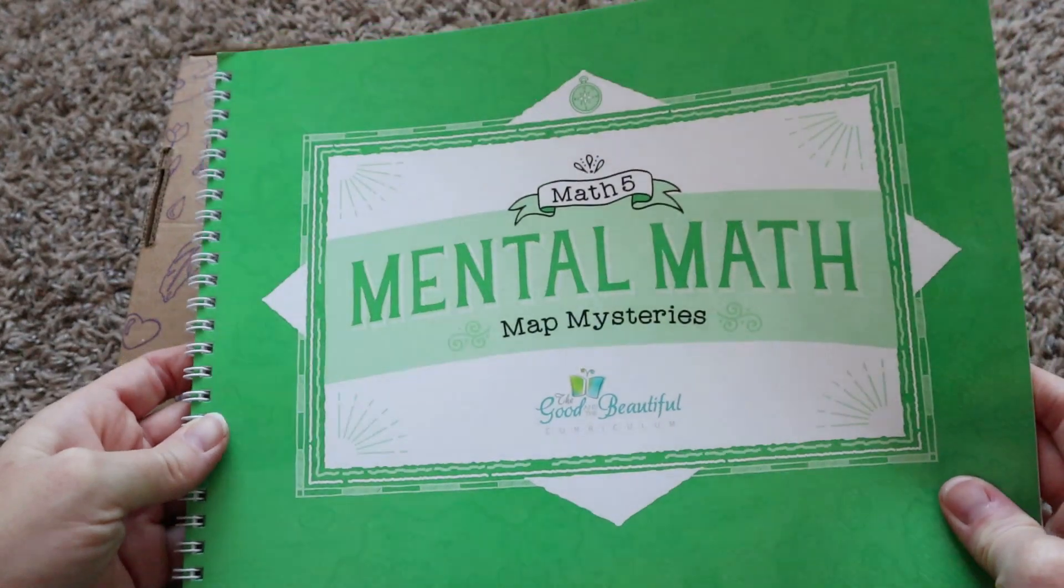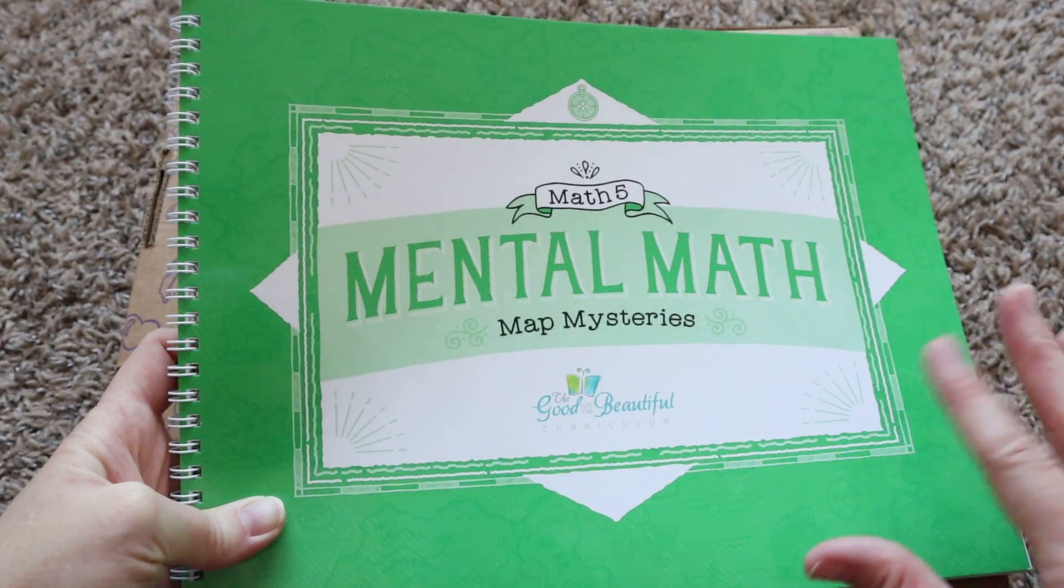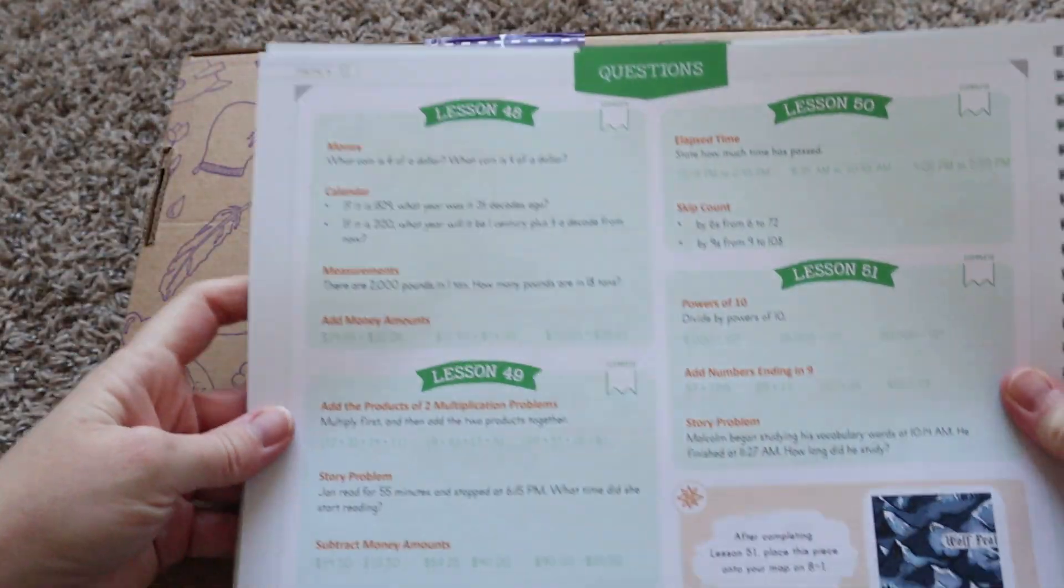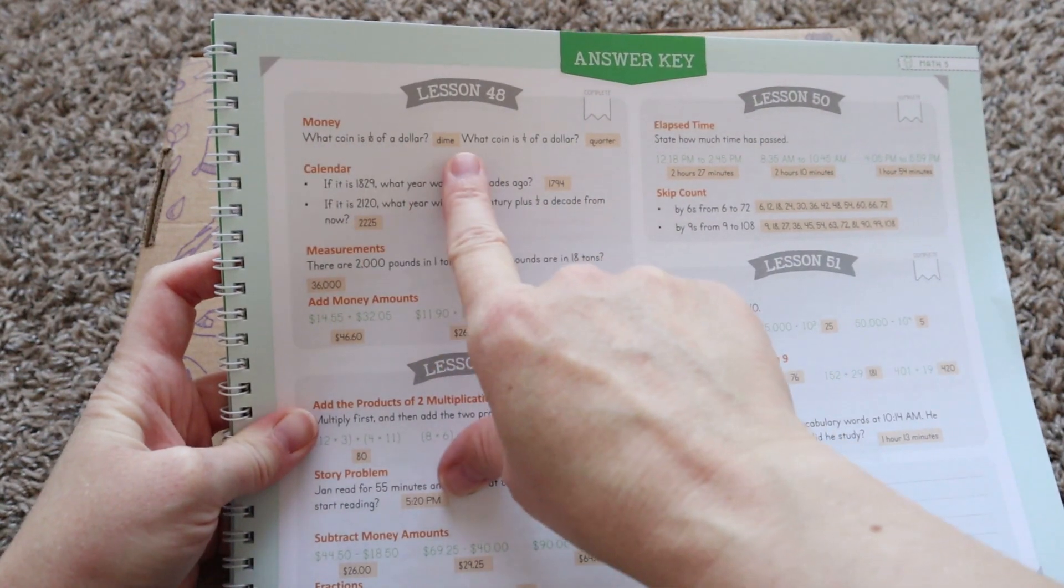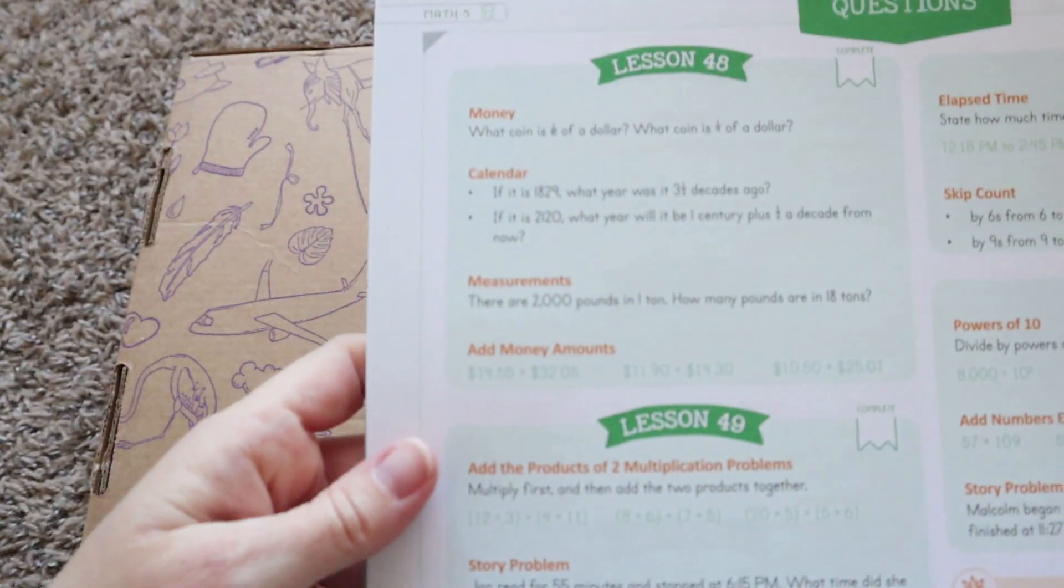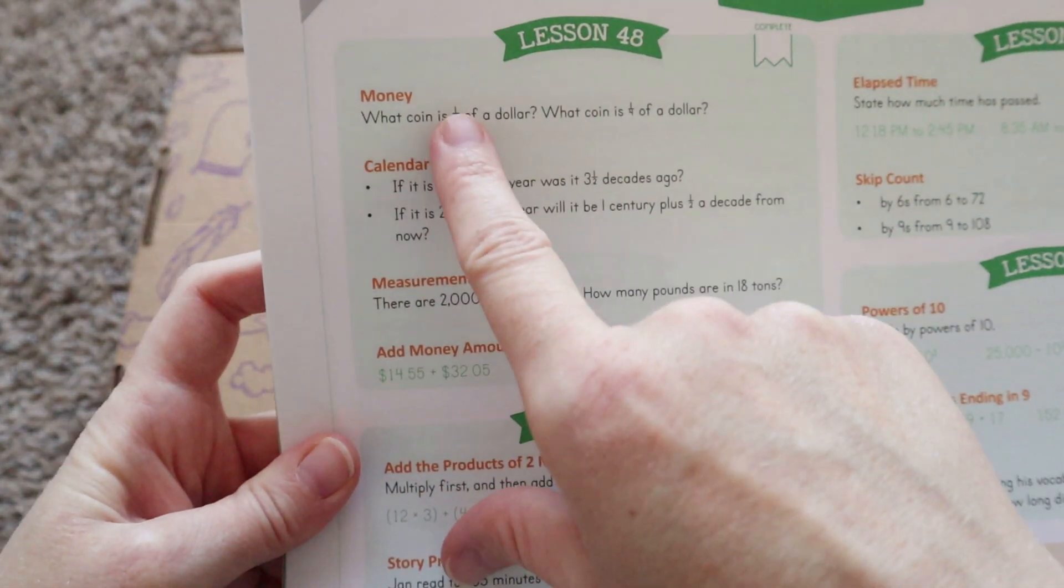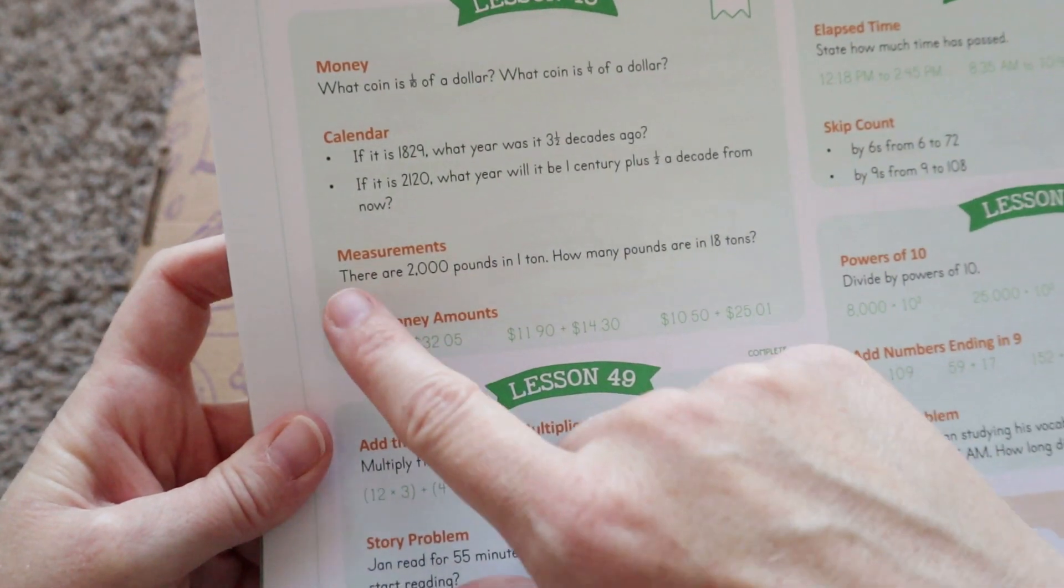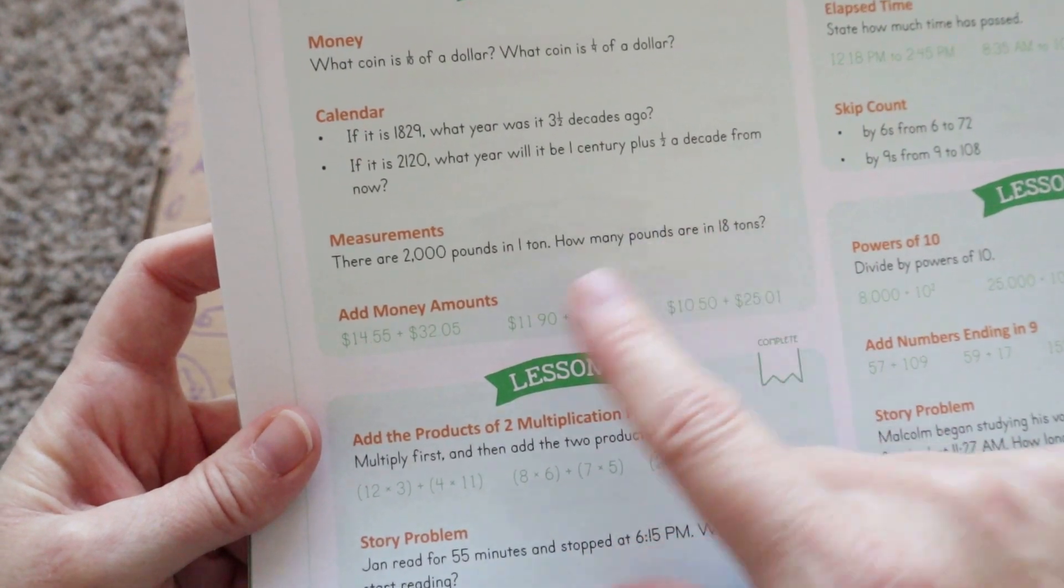All right you guys so now the mental math book I'm just gonna do another quick peek inside this one for you. So basically this takes about five minutes you do it before your child does their course book and so the way that it works is you basically fold the book your child will see this side and then you get the answer key right here so you get to ask them the questions and then you have the answer. And so what one of those lessons looks like is say lesson 48 what coin is one tenth of a dollar what coin is one fourth of a dollar and then it has some calendar questions there's measurements there are 2,000 pounds in one ton how many pounds are in 18 tons and then they're going to add these money amounts together.